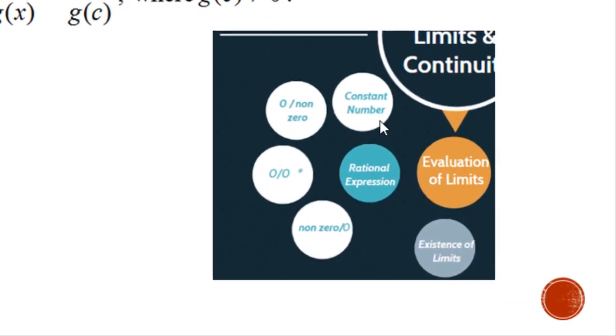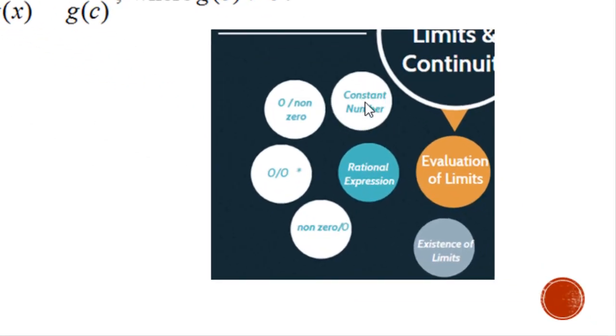we will have four possible cases. Firstly, you will get a constant number, or maybe we will get 0 at the numerator or 0 at the denominator, and the last one is both with 0.